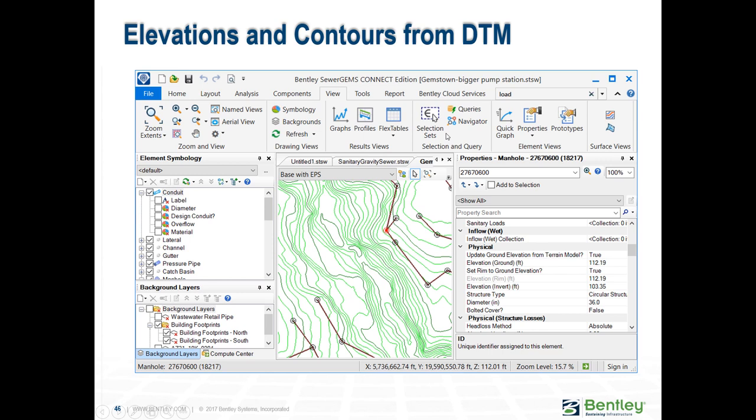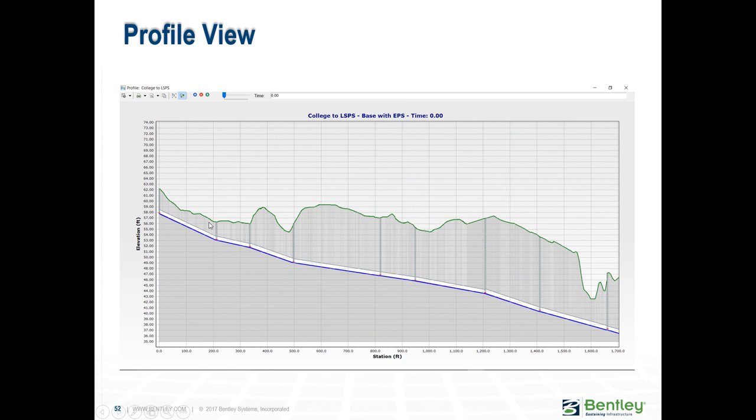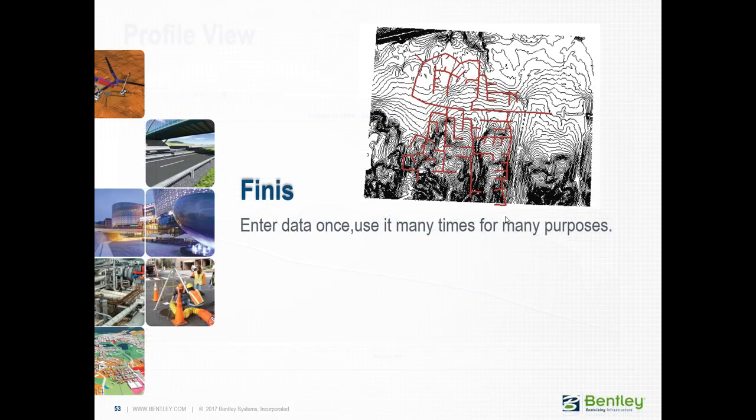So when you open a terrain model, no longer do you have just X and Y data, you would now have X, Y, and Z data. And if you drag those elements anywhere on your map, and as long as you have this update ground elevation from terrain model enabled, this field, the ground elevation, would be updated anytime you move your elements, which is pretty neat. It also gives you the advantage of seeing the real ground elevation for your profiles. So before, in all the exercises we've done, we've basically seen a straight line between manhole and manhole, but when you have this terrain models enabled, you can see the actual terrain.